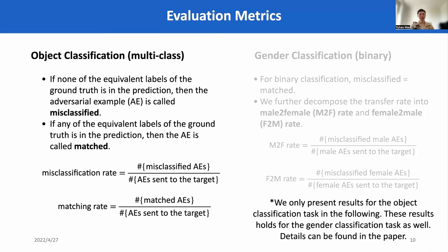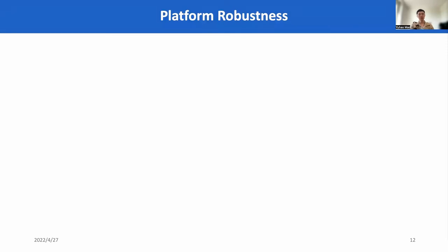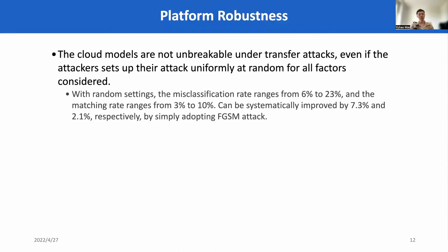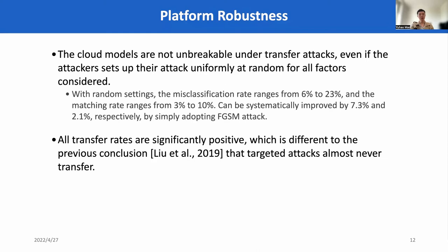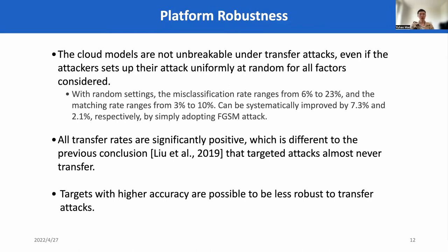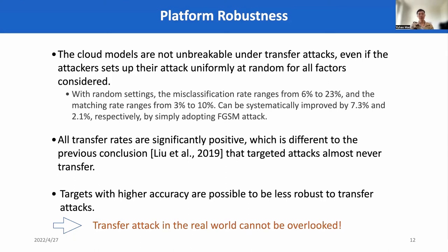These results are consistent with the object classification tasks. We also omit the experimental details here and only present the conclusions. The first considerable factor is platform robustness. We found that cloud models are not unbreakable against transfer attacks, even if the attacker sets up their attack uniformly at random. We found that all transfer rates are significantly positive, which is different from lab conclusions that targeted attacks almost never transfer. In addition, we find that targets with higher accuracy are possibly less robust to transfer attacks. All these facts suggest that transfer attacks in the real world cannot be overlooked, as they have non-trivial success rates but ignorable marginal costs.